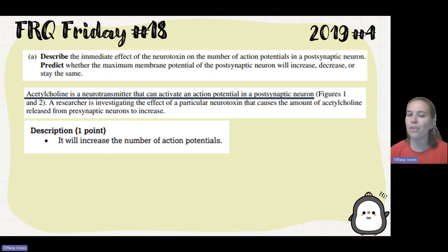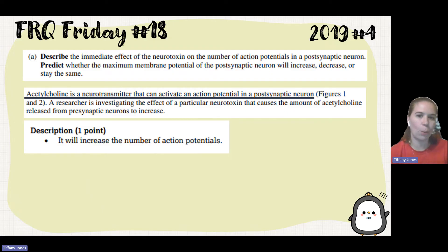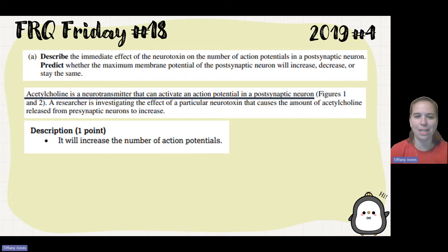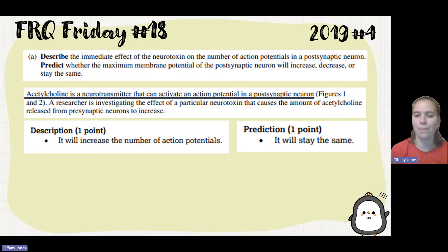Predict whether the maximum membrane potential of the post-synaptic neuron will increase, decrease, or stay the same. The action potential is going to stay the same no matter what — it's an all-or-none response. No matter how many times you activate it, it's only going to reach that maximum every single time, so it will stay the same.